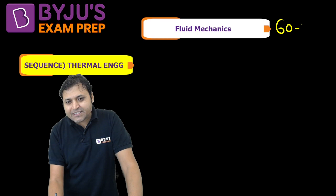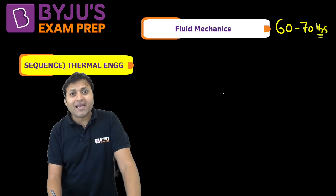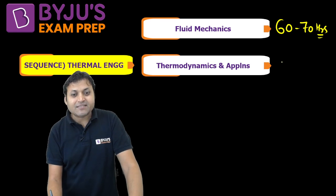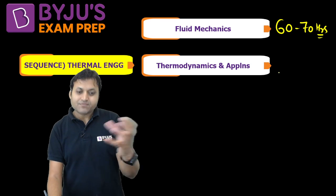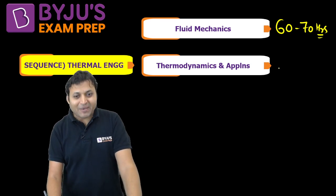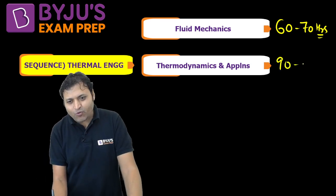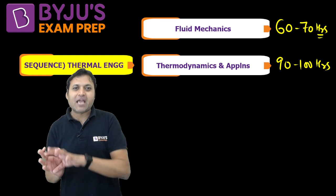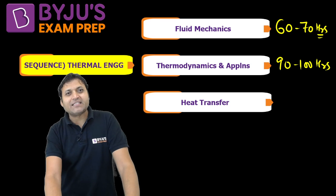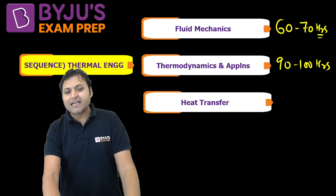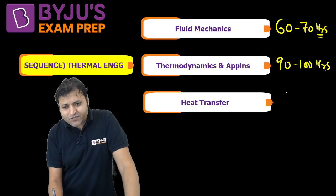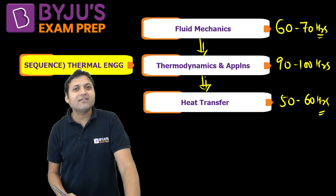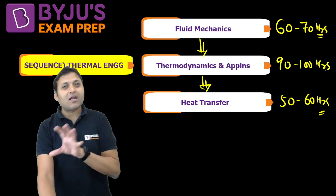For fluid mechanics along with hydraulic machines, spend around 60 to 70 hours. Then go for thermodynamics and its applications — basic thermodynamics does not take much time, but the application part is vast, so spend around 90 to 100 hours. Then heat transfer, which is comparatively smaller and carries less weightage, should be given 50 to 60 hours. This is the order: fluid mechanics, then thermodynamics, then heat transfer.